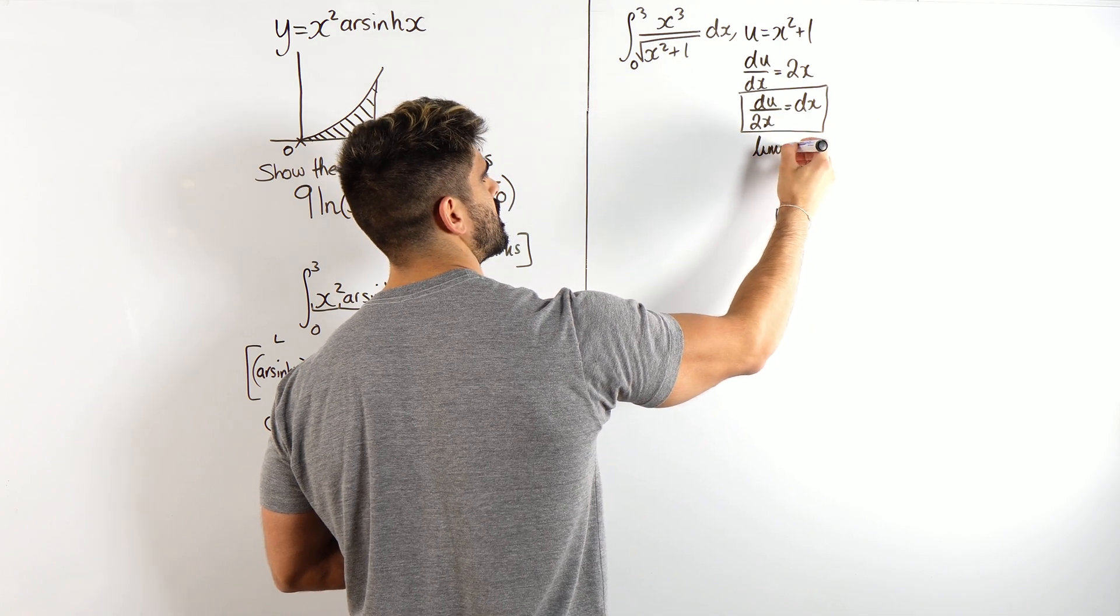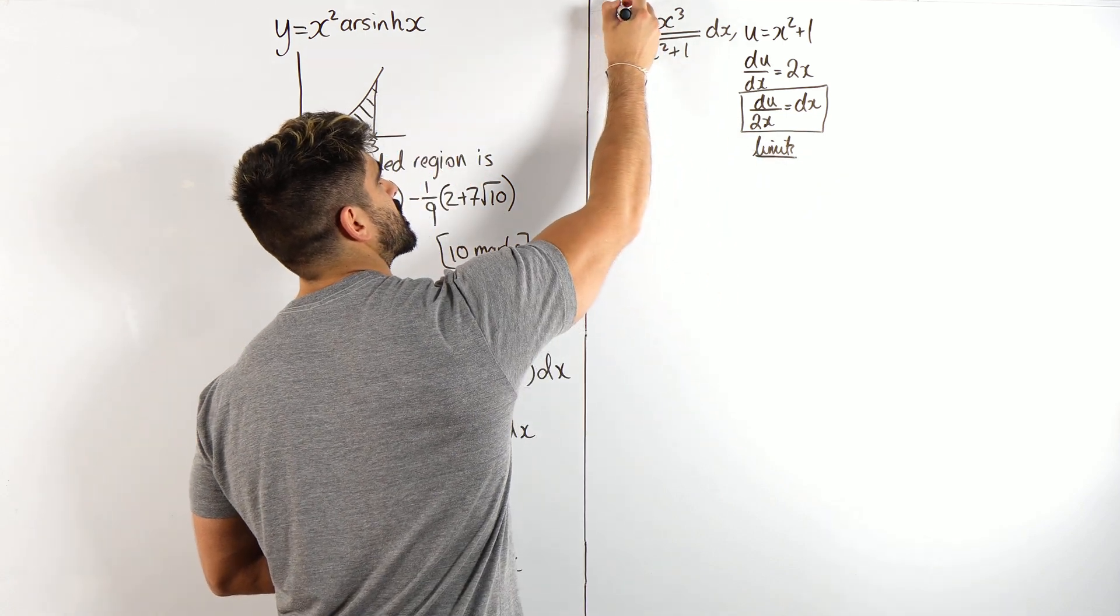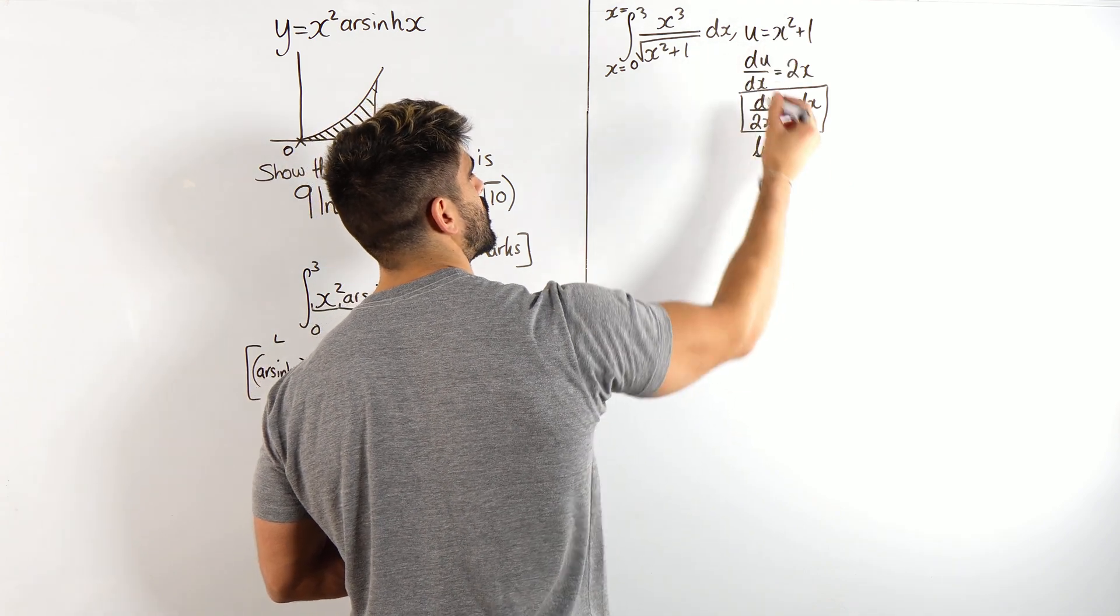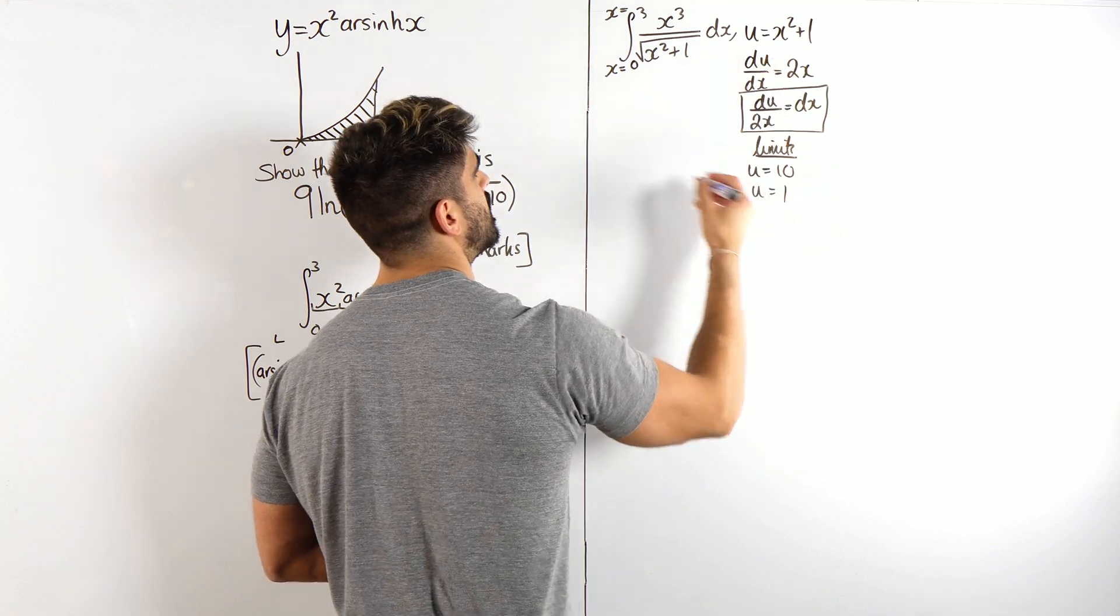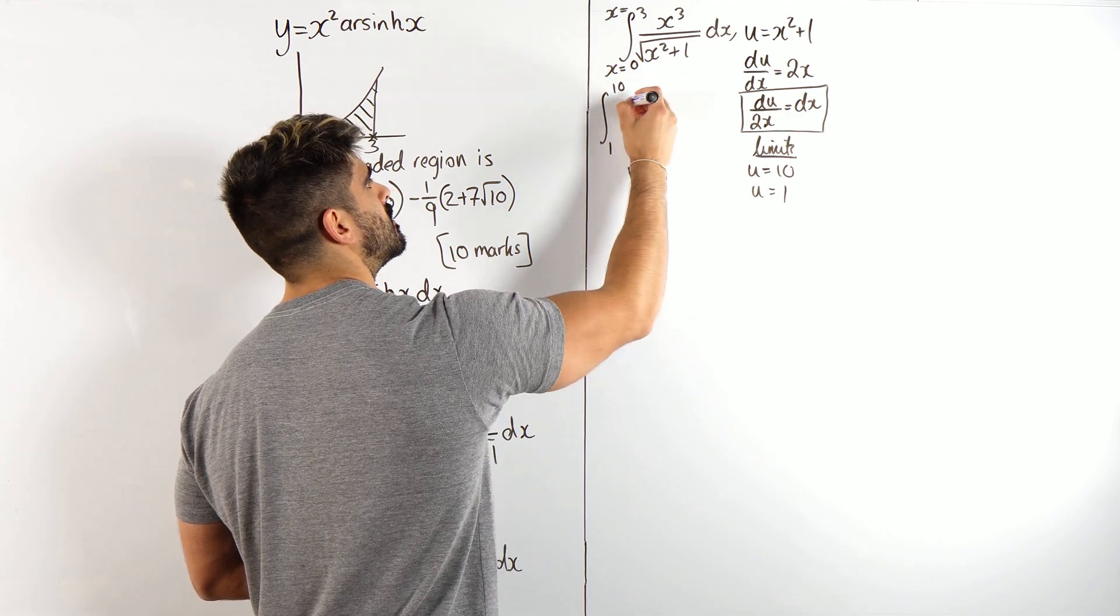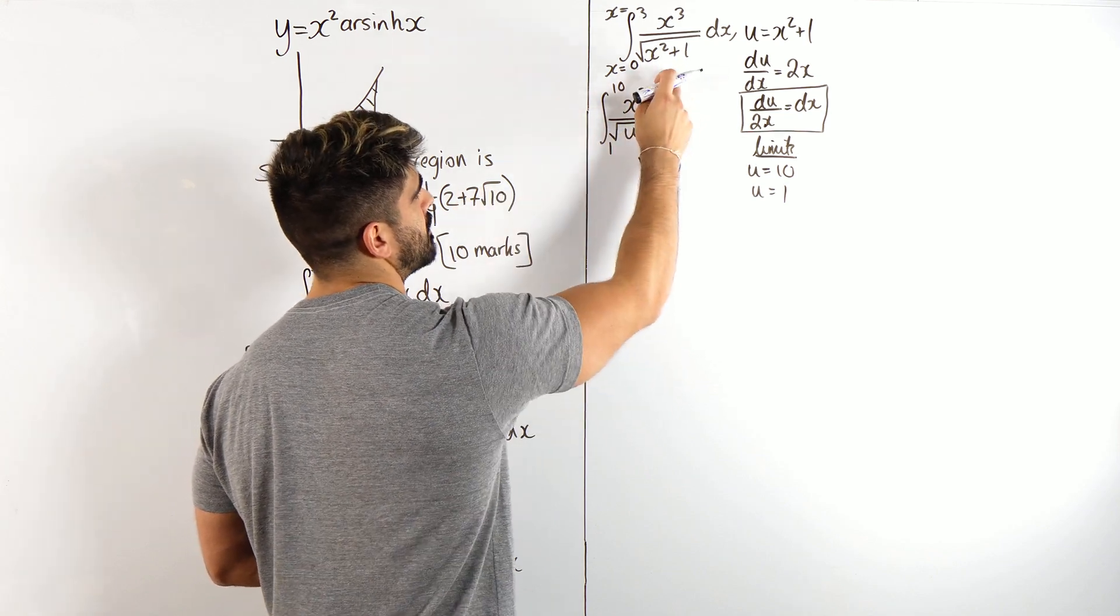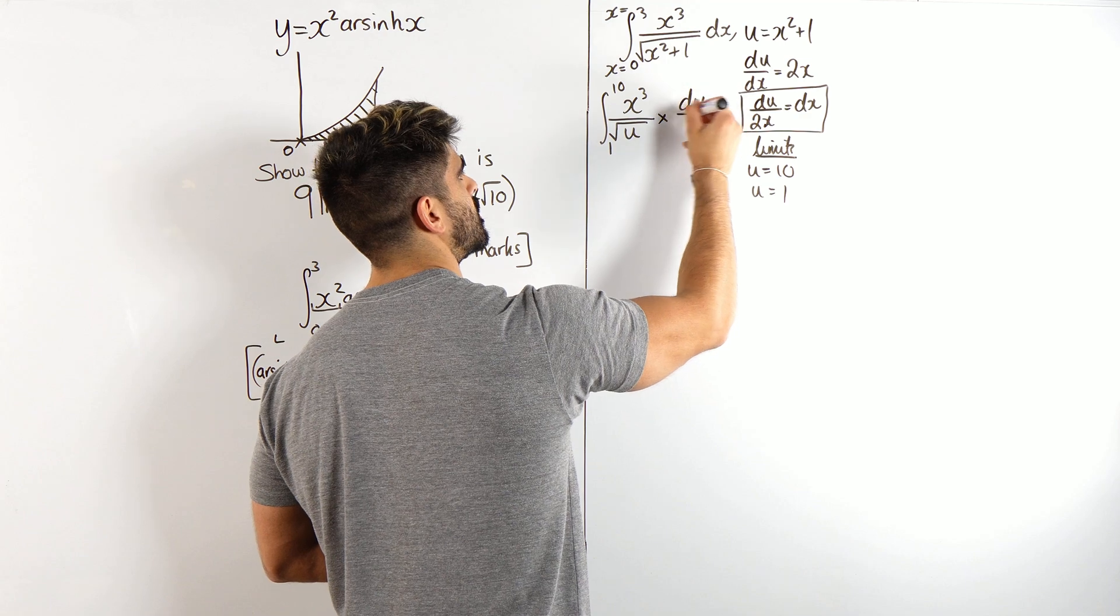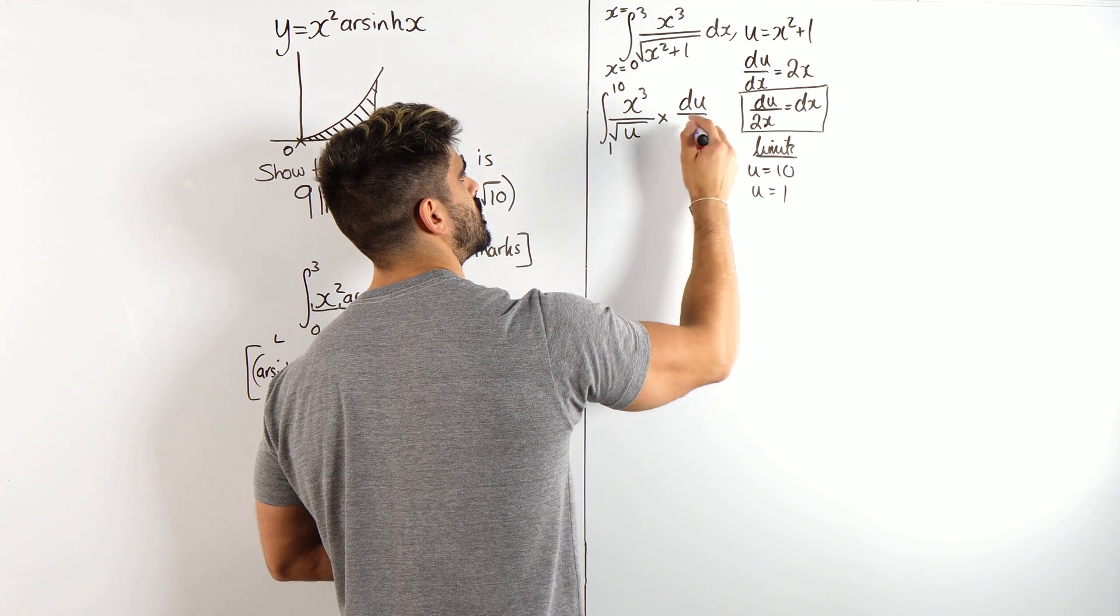If we look at the limits, these are x limits, right? So, when x is 3, u is 10, and when x is 0, u is 1. So, my integral is now between 10 and 1, x cubed over root u, yeah, because I let that be u, times du over 2x, whoops, du over 2x.